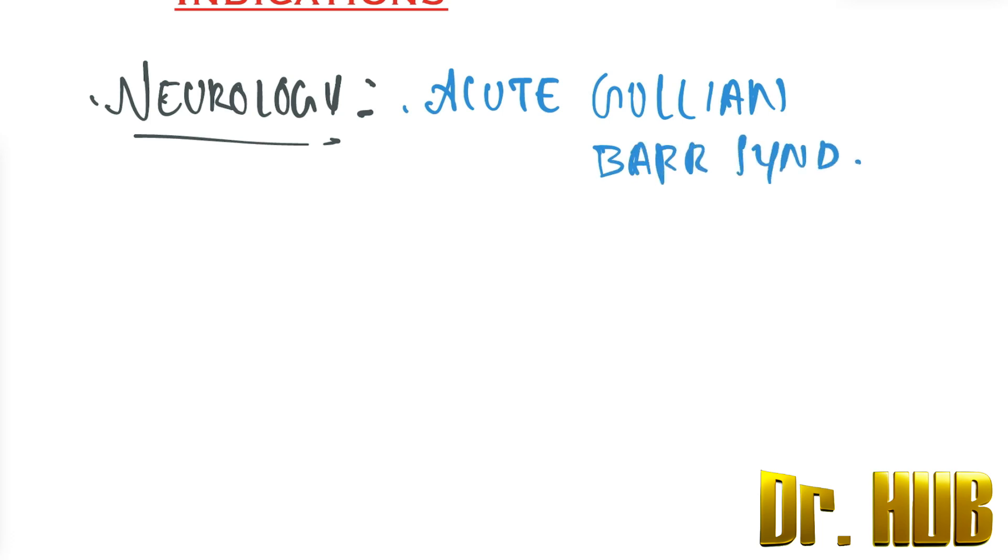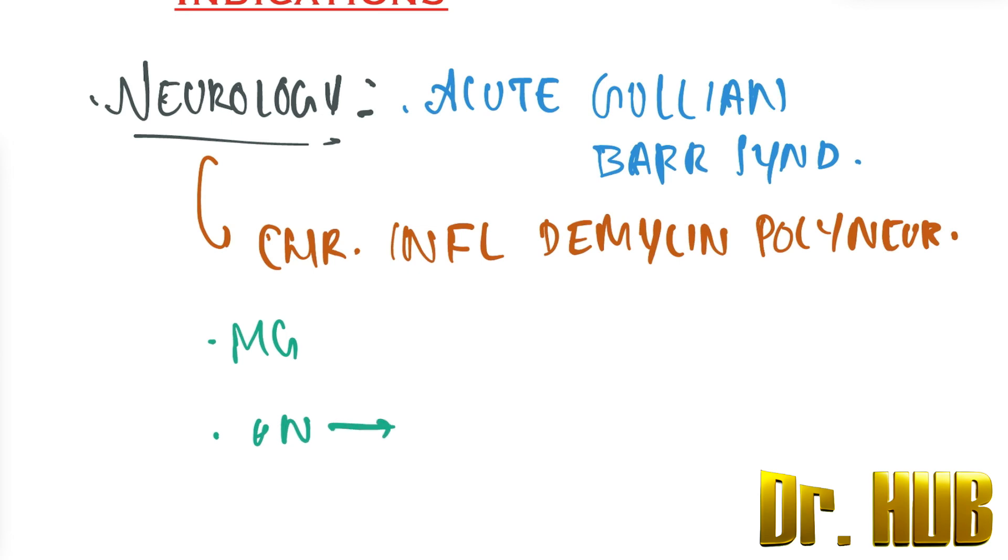There is also chronic inflammatory demyelinating polyneuropathy, then there is myasthenia gravis, polyneuropathy associated with paraproteinemias, and also PANDAS.